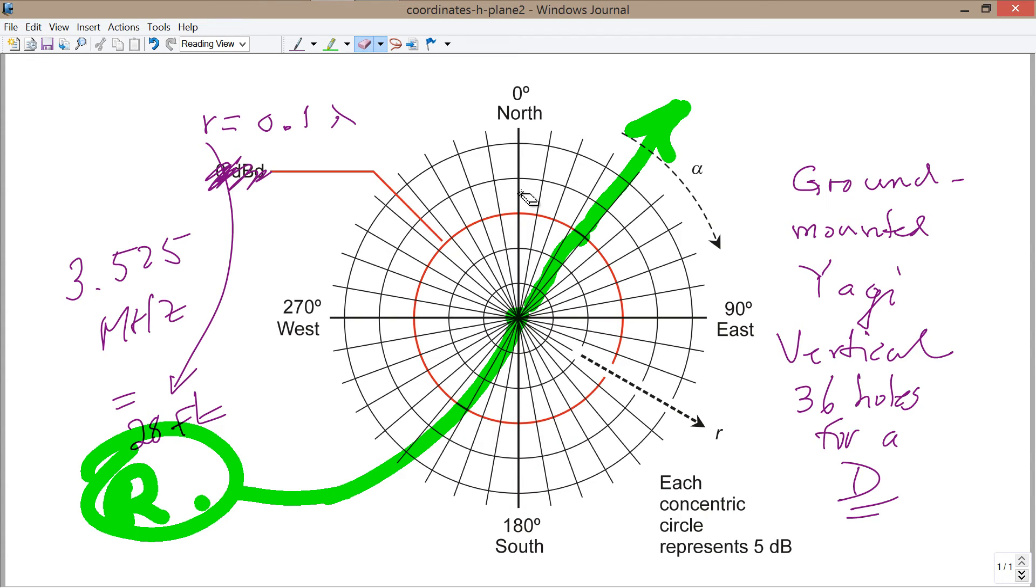And we'd get a unidirectional radiation pattern. Now, we can go back and look at the radiation pattern of this thing, and consider this circle to represent 0 dBd, with just a single vertical all by itself. This would have an omnidirectional pattern, right at that red circle. But when you put that parasitic in there, you're going to get a unidirectional pattern with just about 6 dBd of gain. Now, once again, we can consider that each concentric circle represents 5 dB. We're going to get a unidirectional pattern with about 6 dBd of gain.